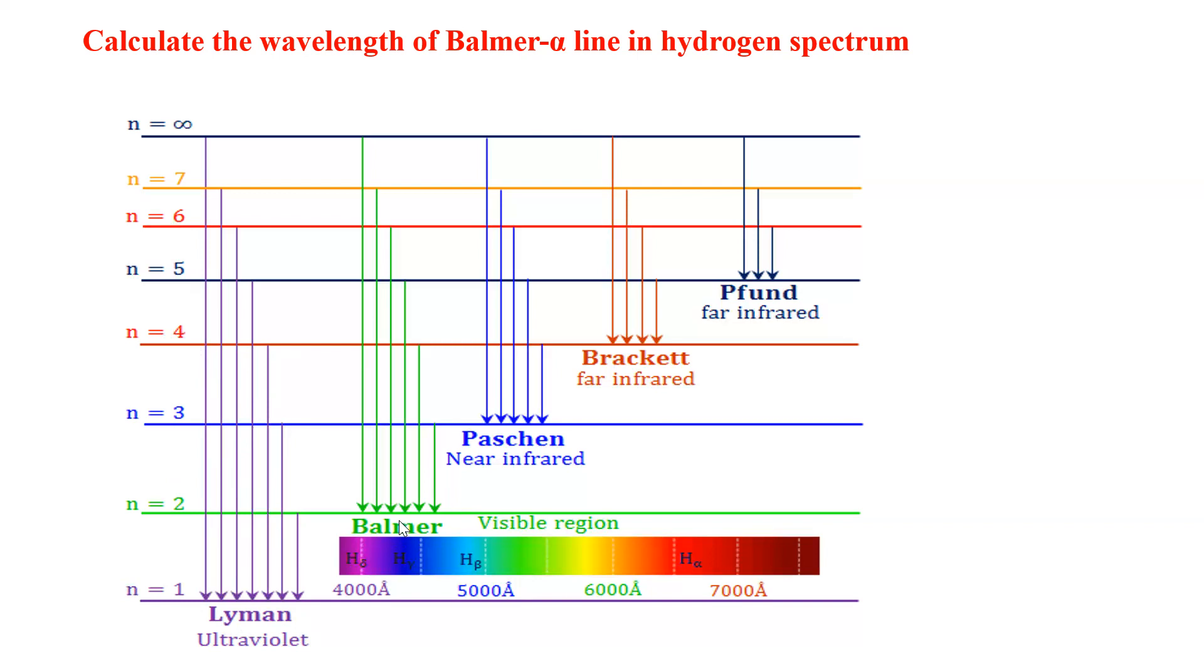Similarly, in the case of Balmer, the transition is from higher orbits to n equal to 2, the second orbit. So here 3 to 2 is the Balmer alpha, 4 to 2 is beta, and 5 to 2 is gamma. Balmer alpha is the transition from n equal to 3 to 2.